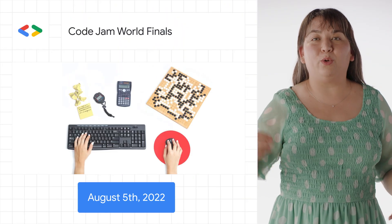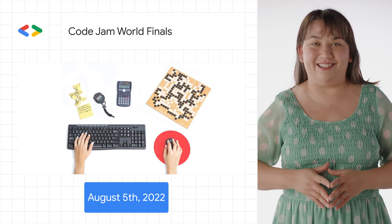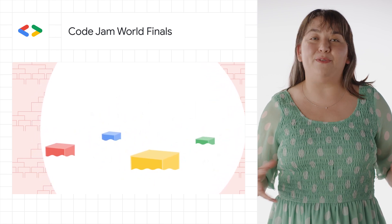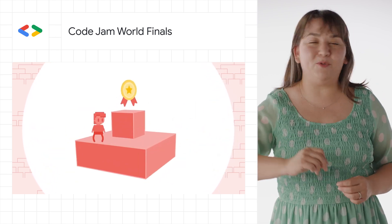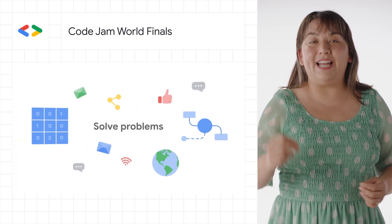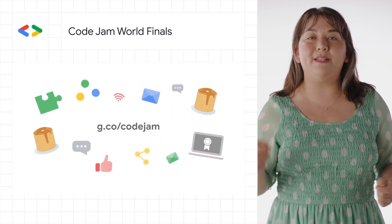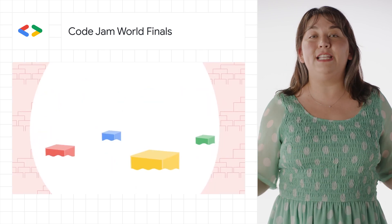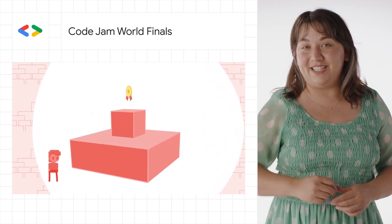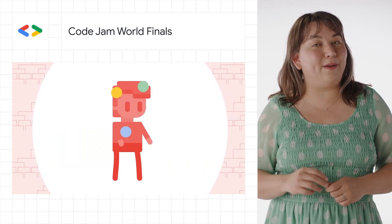The Code Jam World Finals are coming up on August 5th. Code Jam is Google's longest-running coding competition. Participants have worked their way through multiple rounds of algorithmic coding challenges over the last few months, and now the top 25 competitors will face off at the World Finals on August 5th. Tune in to the livestream to see the action unfold, hear from Code Jam engineers about the problems the finalists are tackling, and see who will be crowned the Code Jam 2022 World Champion, winning the grand prize of $15,000.